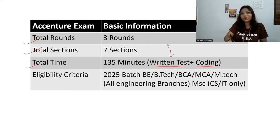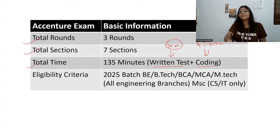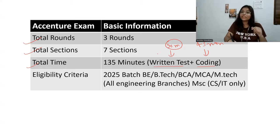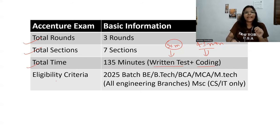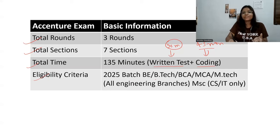The total time will be 135 minutes. The written test will be 90 minutes and coding will be 45 minutes. In 90 minutes you will have 90 questions — one question per minute — and in 45 minutes there will be two coding questions that you have to solve. The eligibility criteria is simple: BE, BTech, BCA, MCA, MTech candidates can apply.